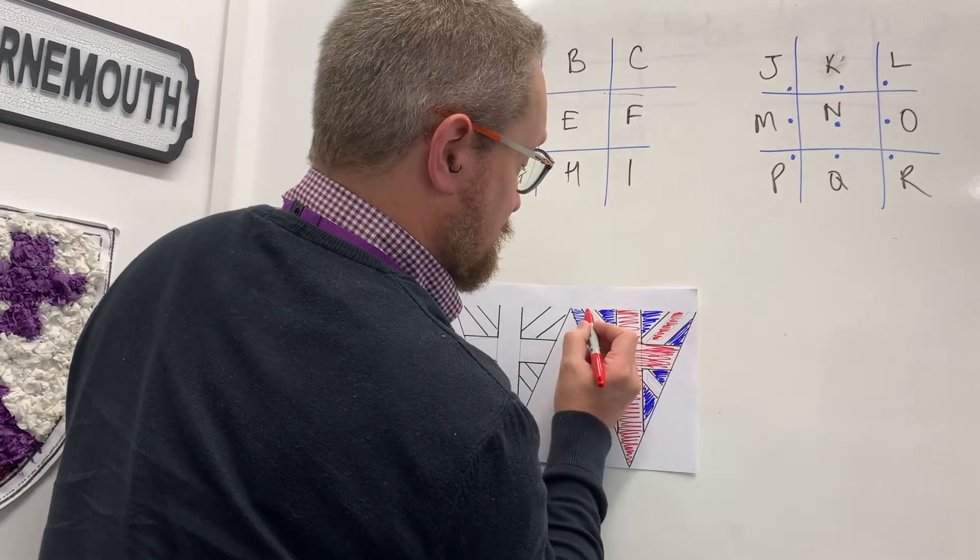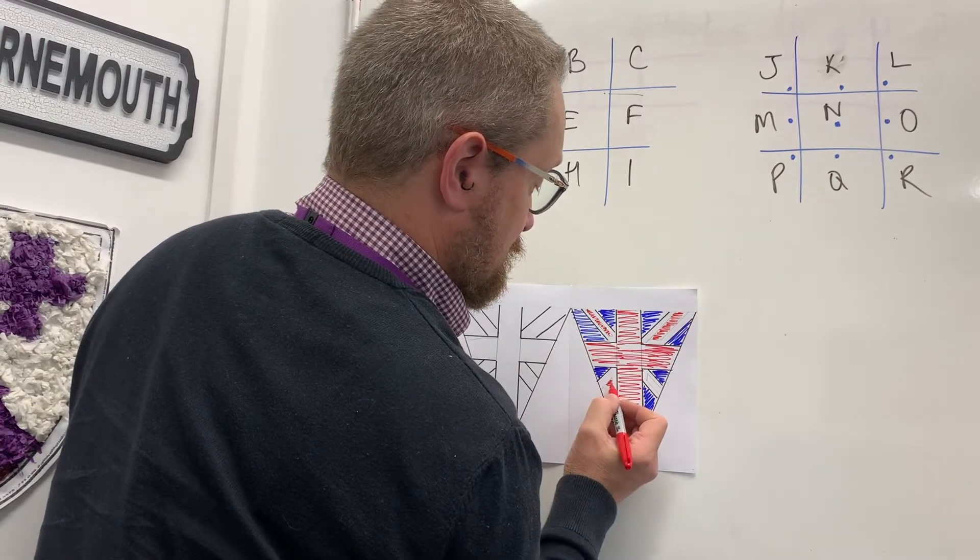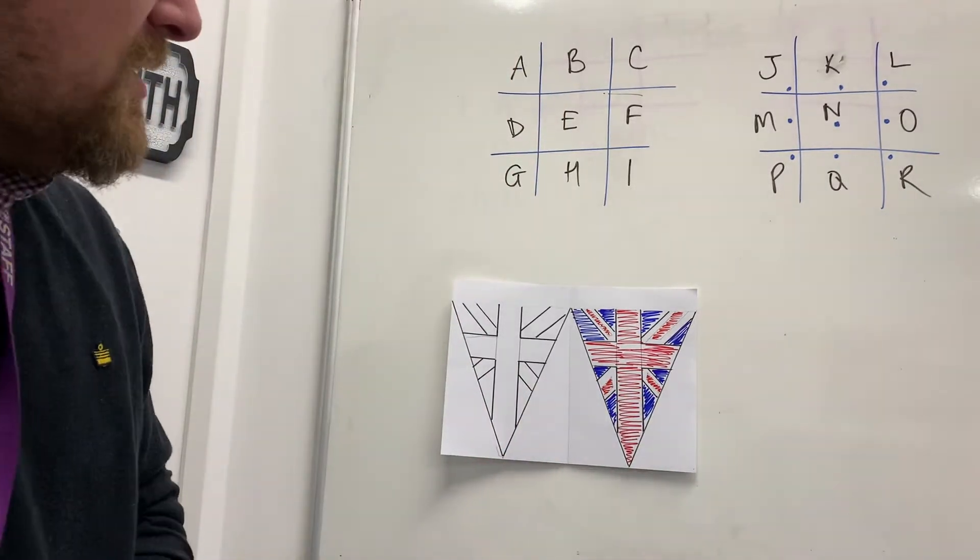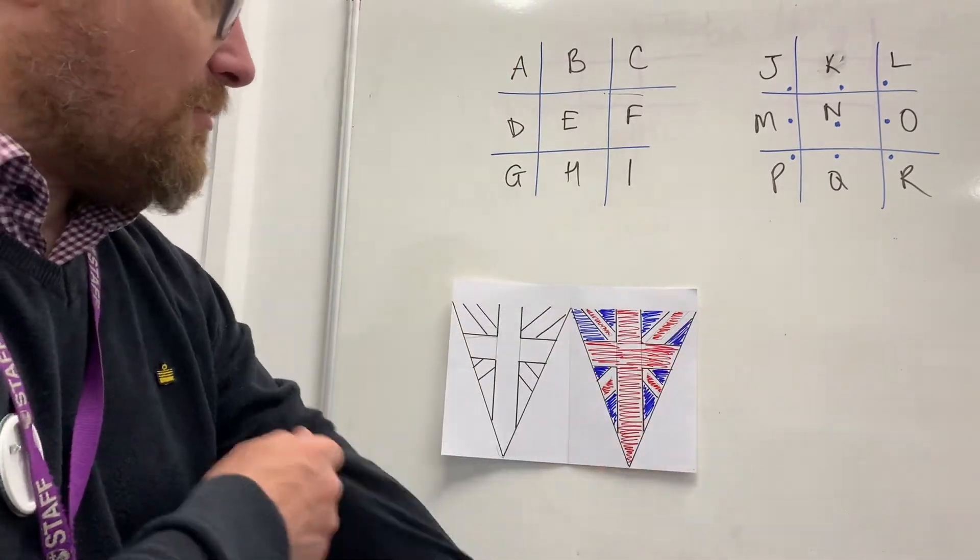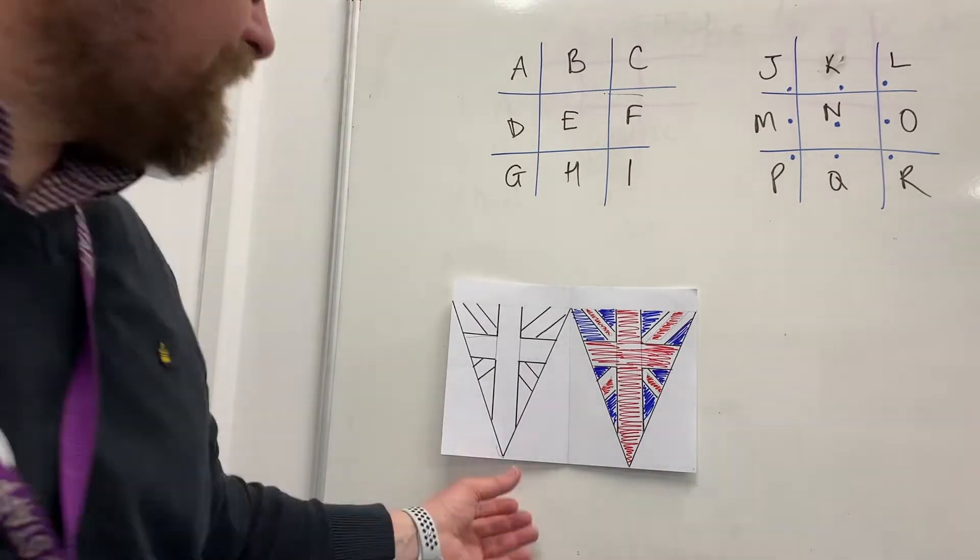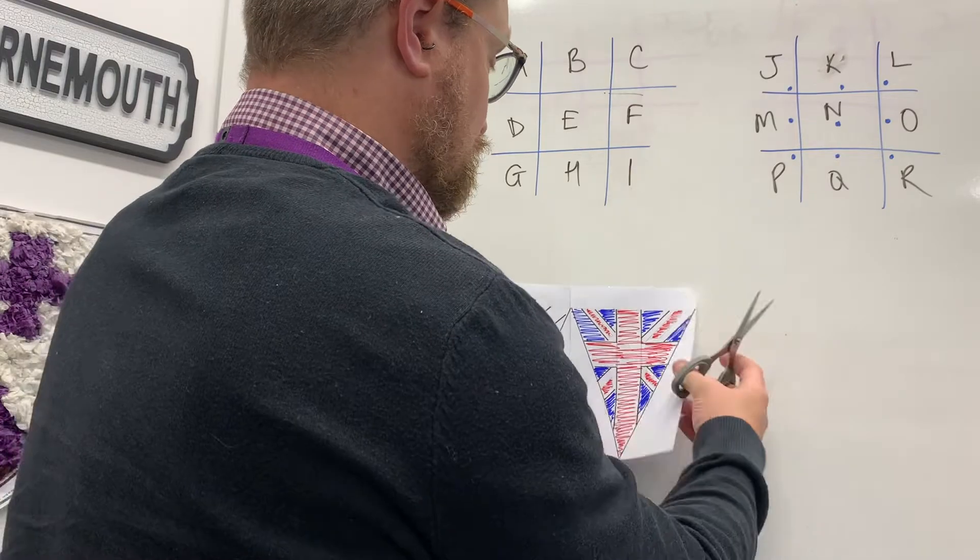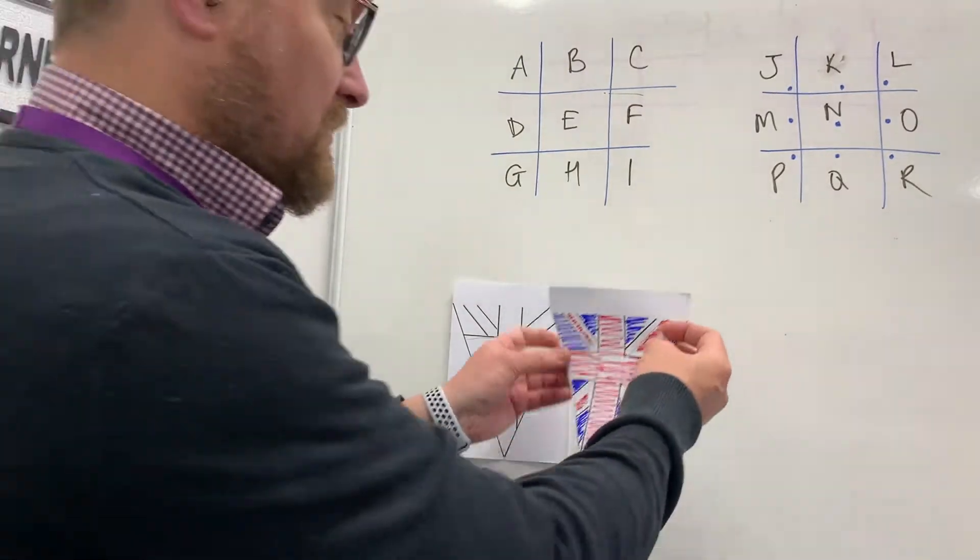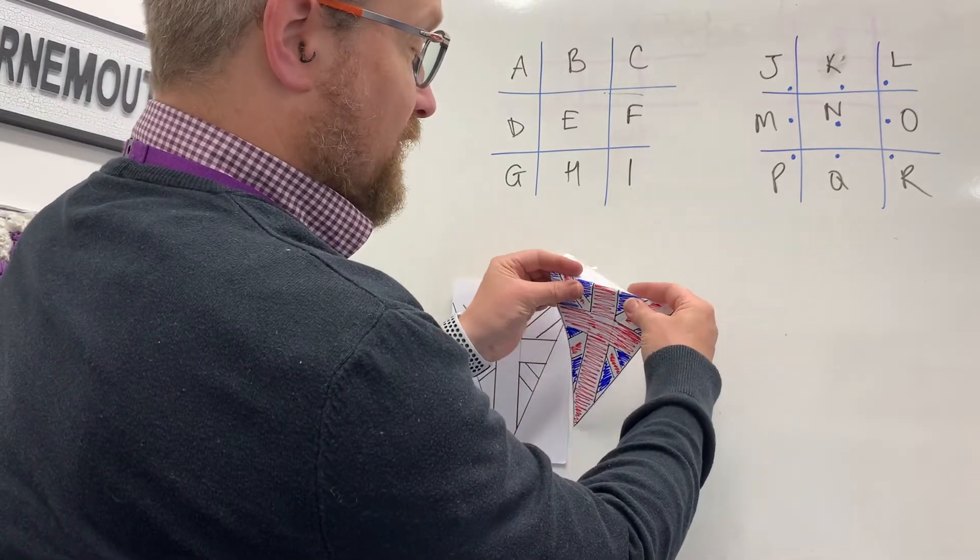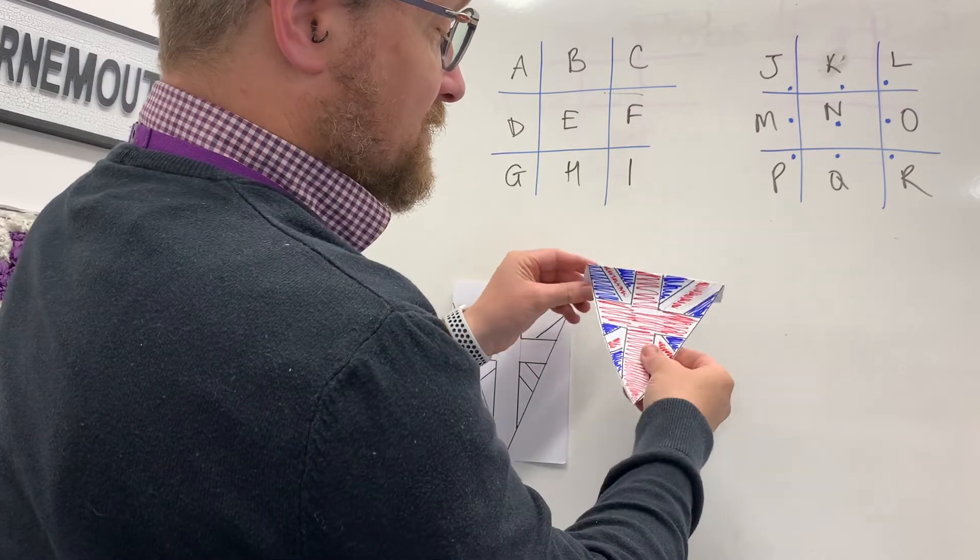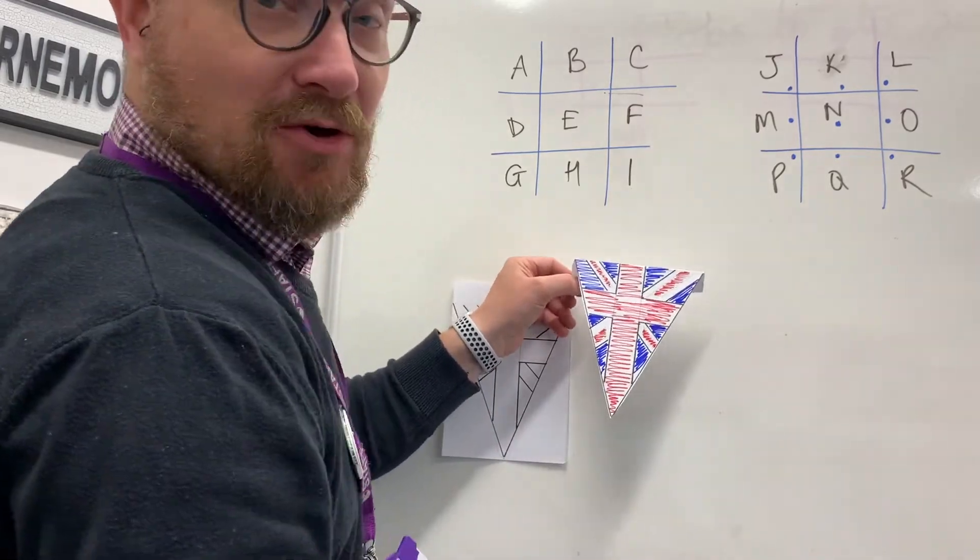Now hopefully yours will be colored a bit better than mine. But there we go, there is our bunting and then you then cut it out. And then handily, you take this bit at the top and you just fold this bit over, and then you can attach that to some string or something and make your bunting.